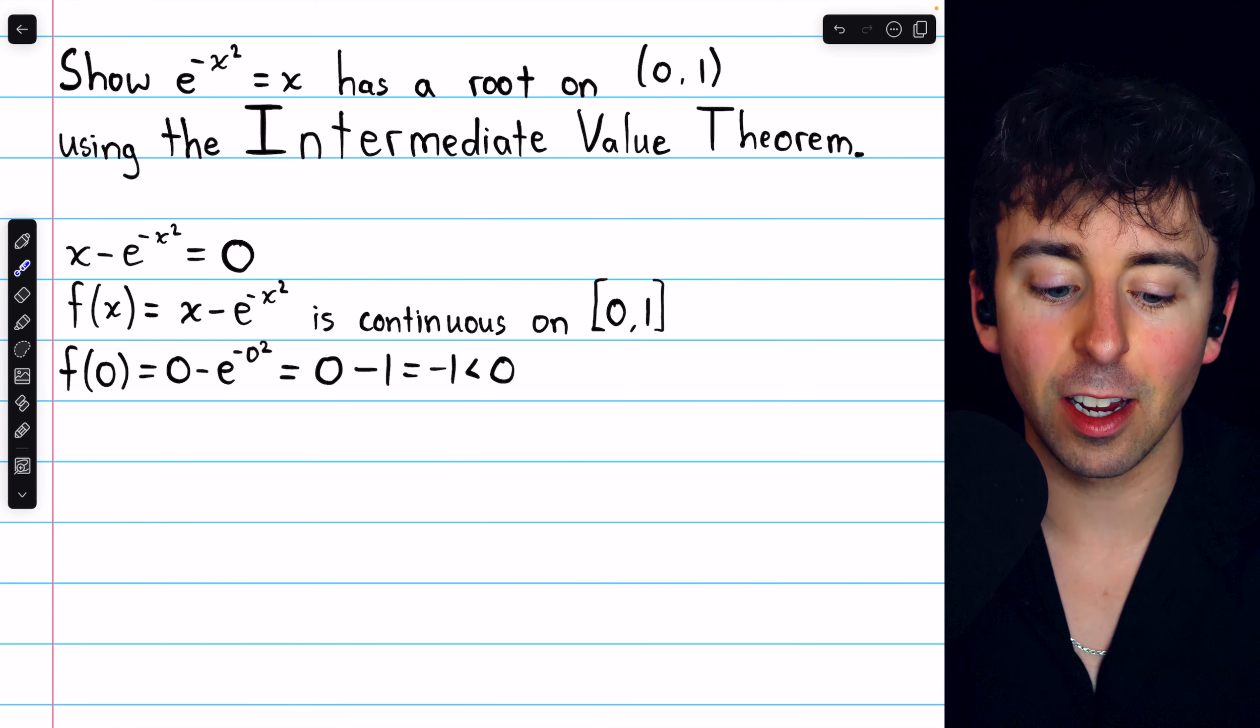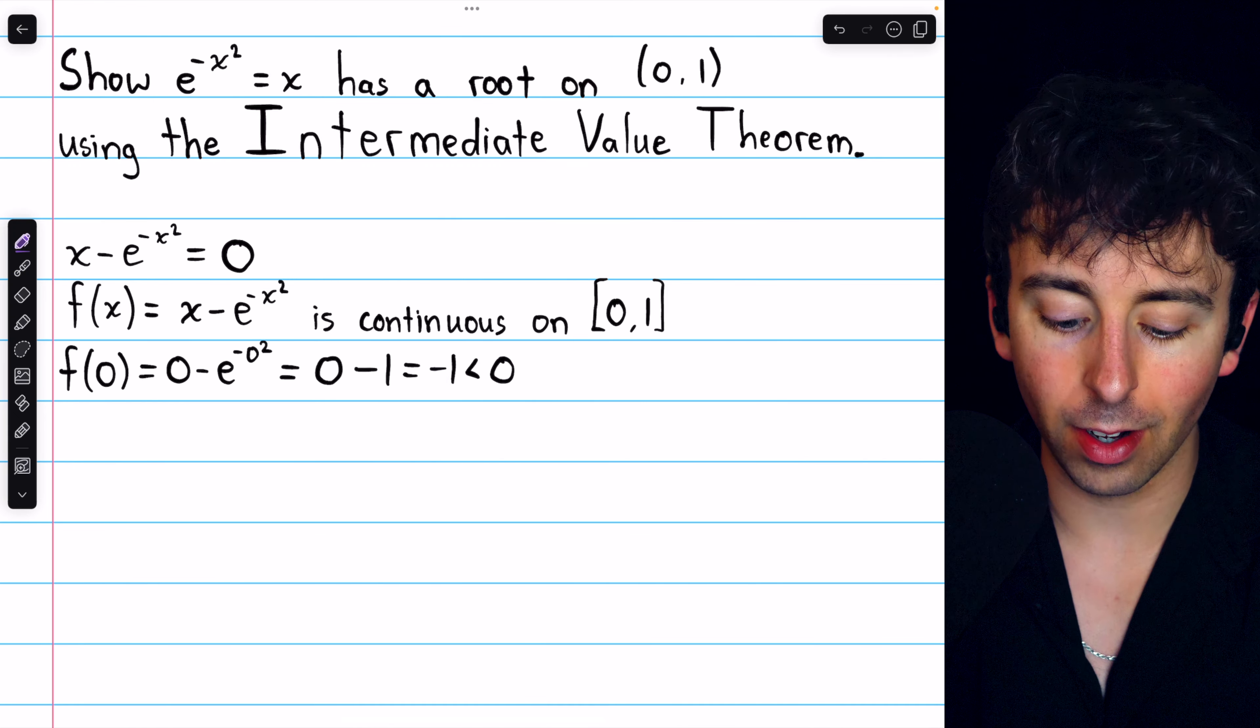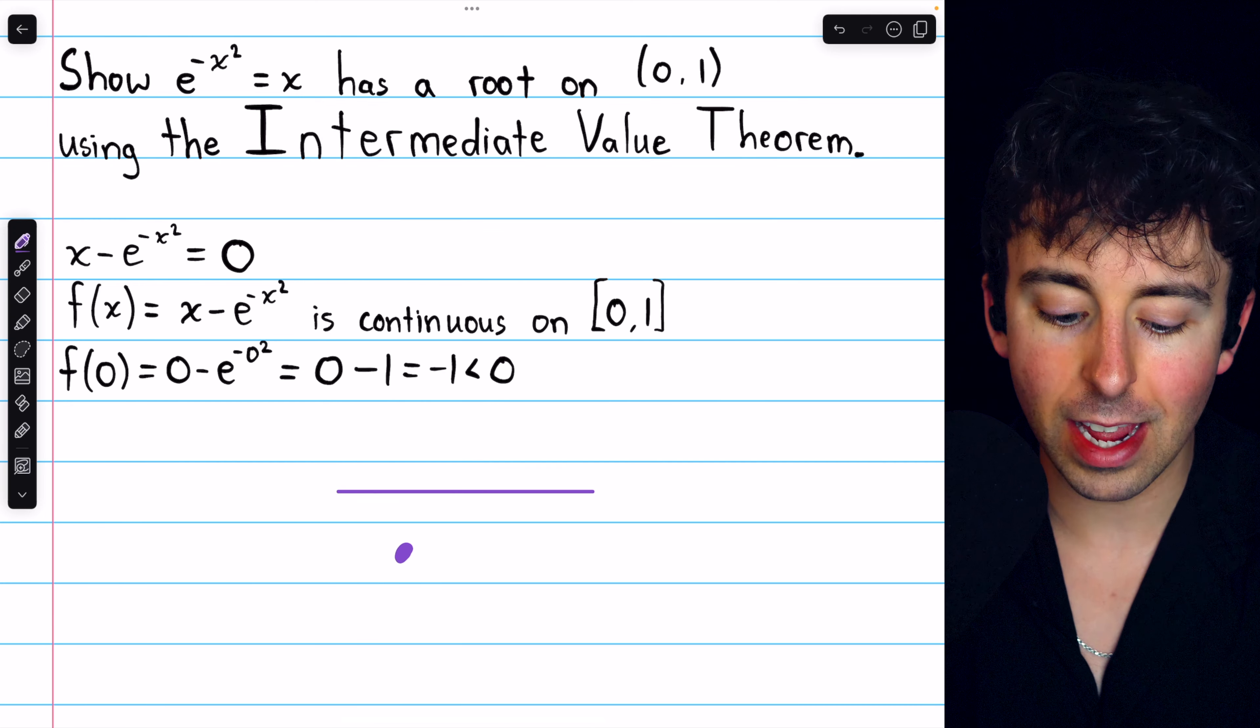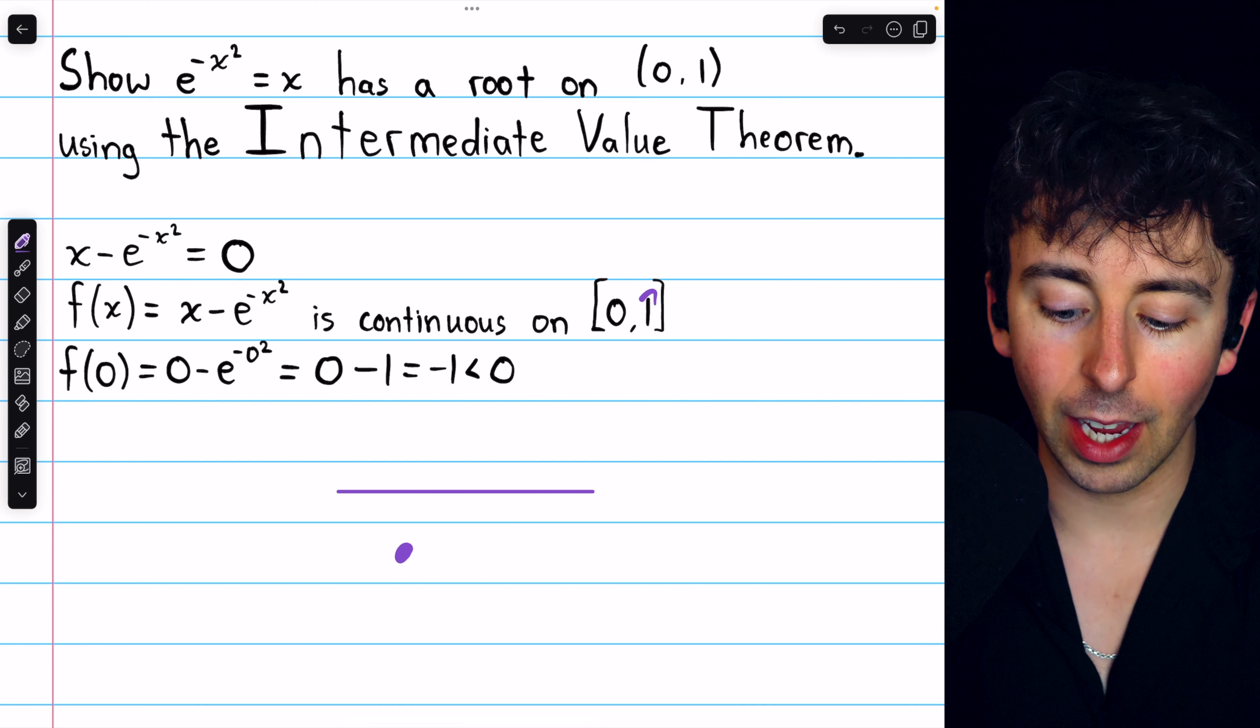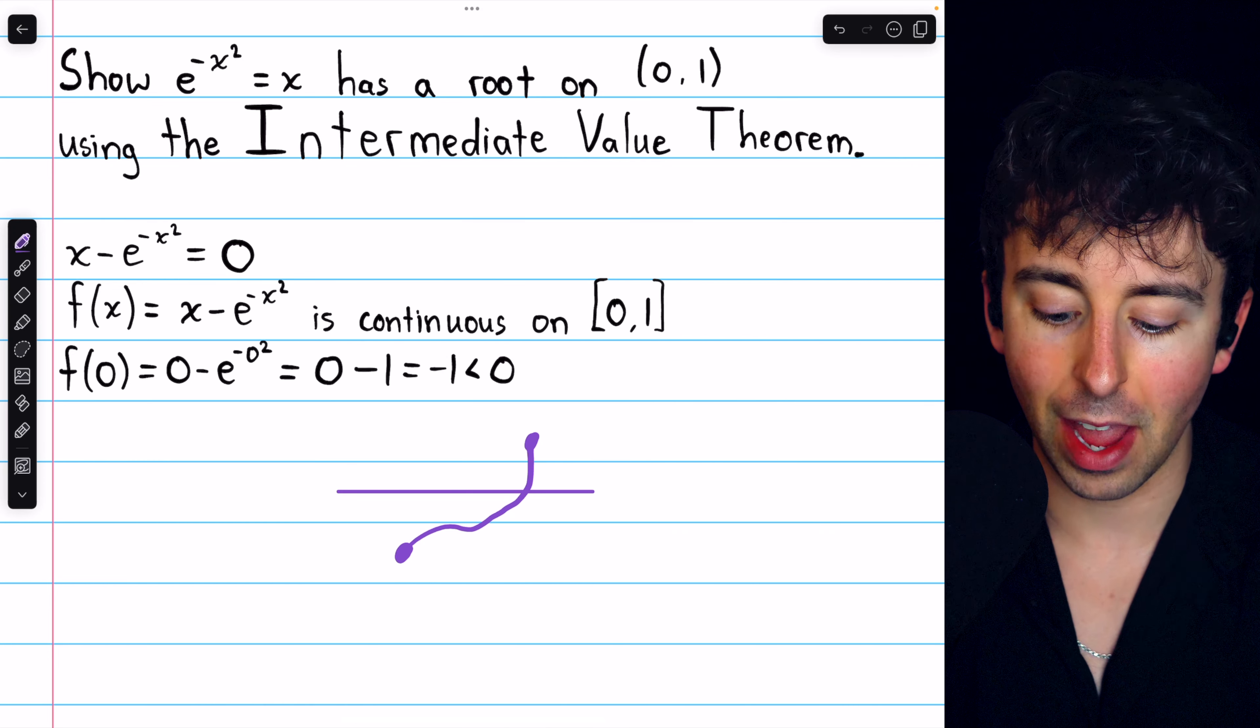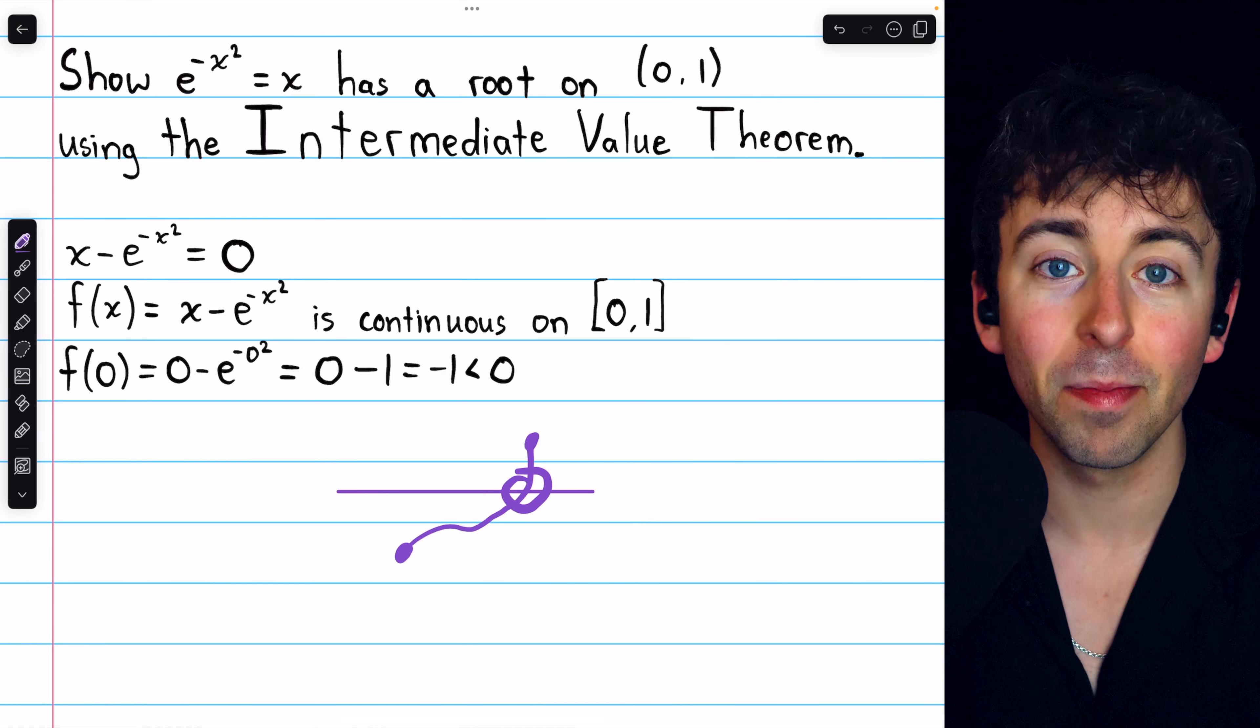which is less than 0. So if this horizontal line represents 0, our function starts down here. Then we need to plug in 1, and hopefully we'll find that the function ends somewhere up there, so it must have passed 0 at some point.